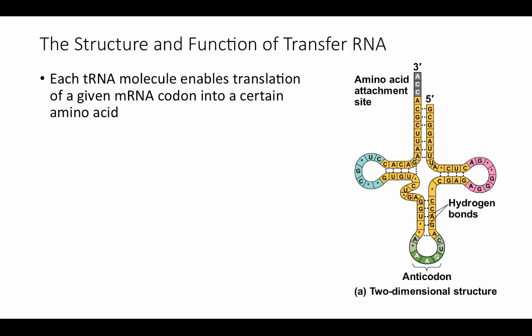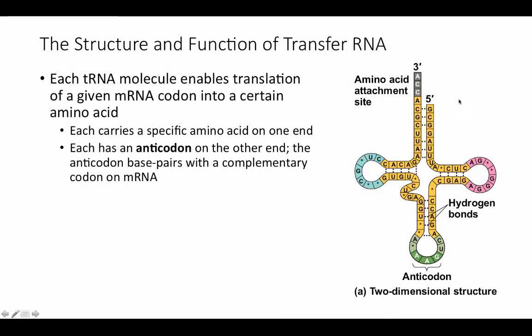Each tRNA molecule enables translation of a given mRNA codon to one particular amino acid. Each tRNA carries one specific amino acid on one end — the amino acid attachment site. Each transfer RNA also has a sequence of nucleotides called an anticodon on the other end of the molecule. The anticodon is going to base pair with the complementary codon on mRNA. The codon on the mRNA that's going to match up with this anticodon would be, for example, UUC.